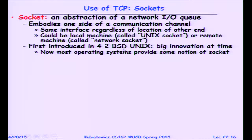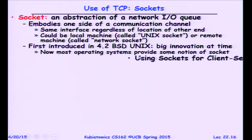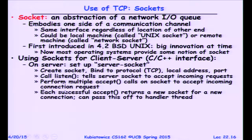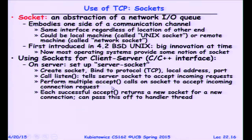Sockets were first introduced in 4.2 BSD — a major release that also had the fast file system. On the server side, you create a socket, bind it to a particular protocol like TCP with an address and port, and call listen — advertising to the world that you'll accept connections. You can then perform multiple accepts, each involving a three-way handshake, and each accepted connection gives you a new socket file descriptor.